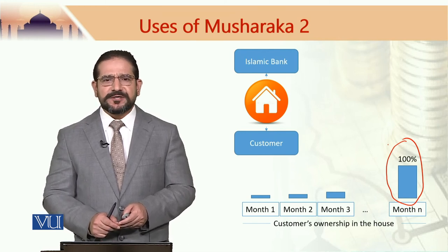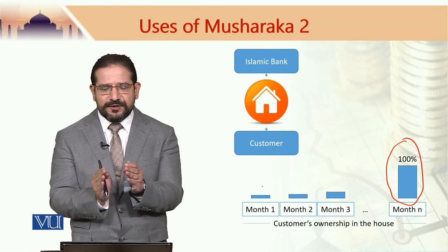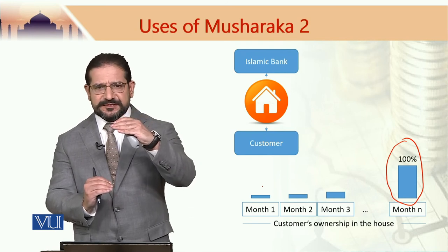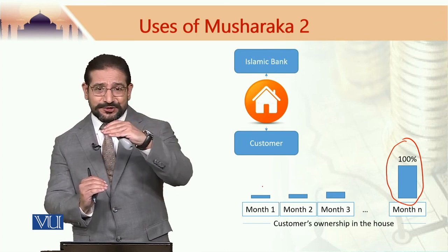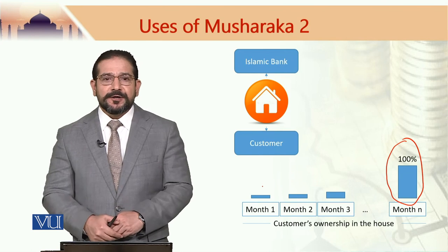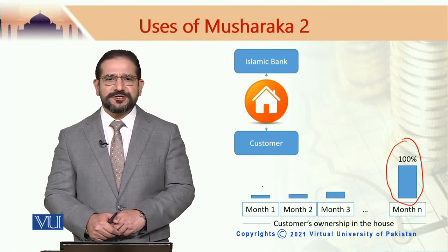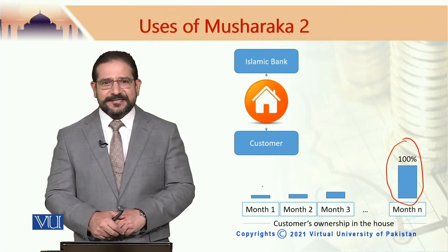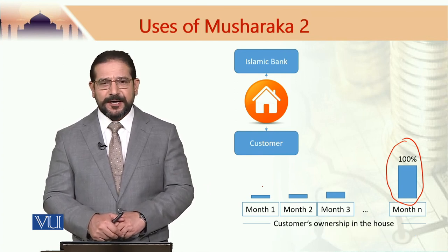Why is this called diminishing partnership? In the beginning, the customer had a very small share in the house and the bank had a very large share. With the passage of time, as the customer pays the monthly installments, the bank's share in the ownership of the house gets diminished — hence the name Diminishing Musharaka, or diminishing partnership. This diminishing partnership is an example of Shirkatul Aqt, because it gets established with an explicit contractual arrangement between the Islamic bank and the customer.